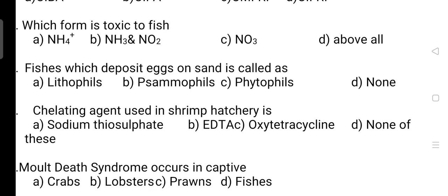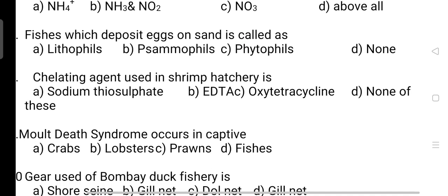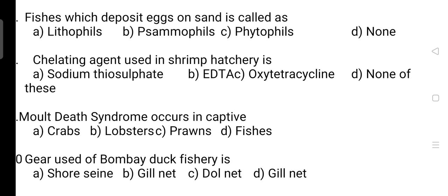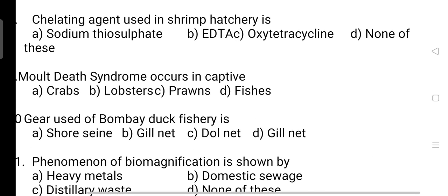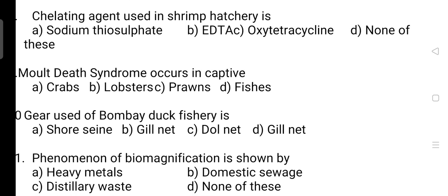Next question: which form is toxic to fish? The correct answer is Option B — it is NH3 and NO2. Next, fishes which deposit eggs on sand are called? They are called psammophils — correct answer is Option B. Next, the chelating agent used in shrimp hatcheries: correct answer is Option B — it is EDTA.